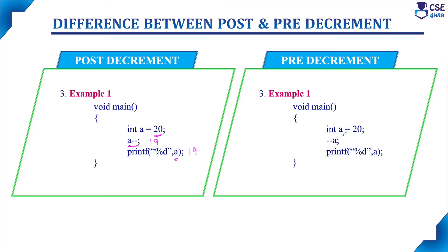Similarly, consider pre decrement. The variable value is 20 and we have placed the pre decrement operator as a single statement. The variable value is 20, it gets decremented, the value will be 19, and if you print the variable, 19 will be printed. We can't find any difference between post decrement and pre decrement here — in both cases the variable value gets decremented by 1 and 19 is printed.